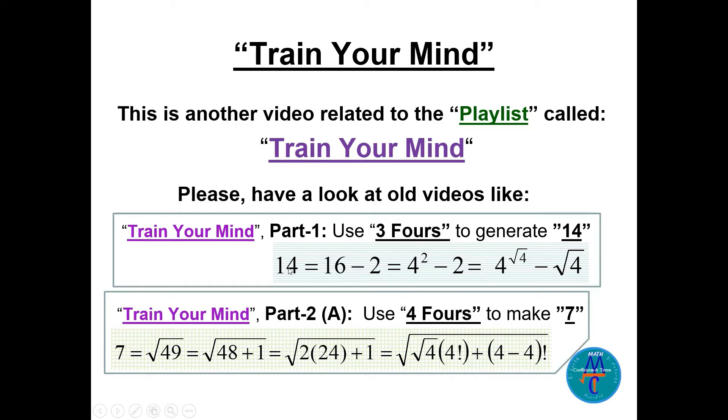So we can say 14 is equal to 16 minus 2. 16 is 4 squared minus 2. Now the 2 we can write square root of 4, so it will be 4 to the power square root of 4 minus square root of 4.